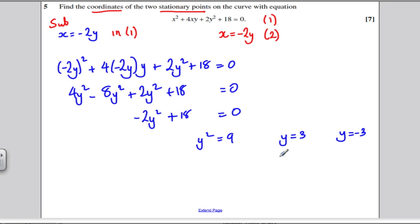Let's find our x from that. Well, using the simple equation, equation 2. If y is 3, x must be minus 6. Subbing in here. And in this case, x must be equal to positive 6. So, the coordinates of the stationary point are minus 6, 3 and 6, minus 3.